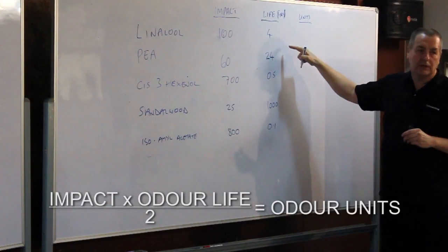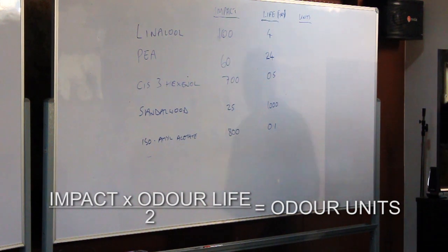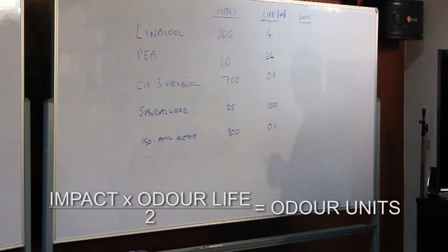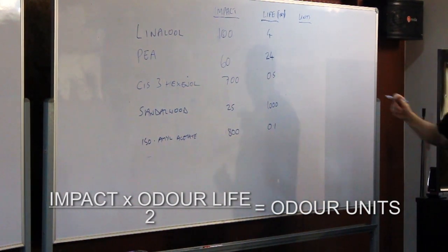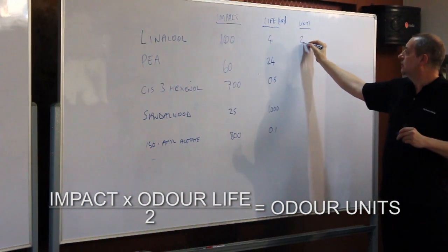So how many odor units have we got? Linalool. 100, 200. So we've got 100 times 4 divided by 2, 200.